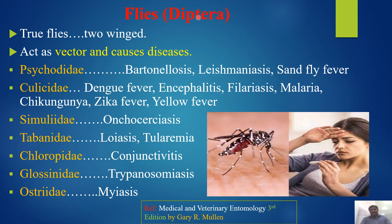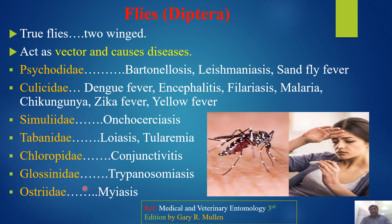Flies are included in the order Diptera, also called true flies because they have two wings. They act as vectors that cause various diseases: Psychodidae cause bartonellosis, leishmaniasis, and sandfly fever; Culicidae cause dengue fever, encephalitis, filariasis, malaria, chikungunya, and Zika fever; Simuliidae cause onchocerciasis; Tabanidae cause loiasis and tularemia; Chloropidae cause conjunctivitis; Glossinidae cause trypanosomiasis; and Oestridae cause myiasis.